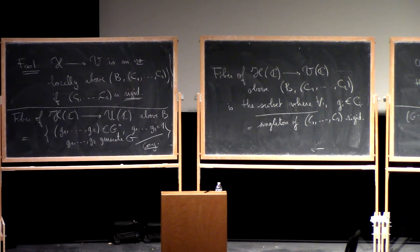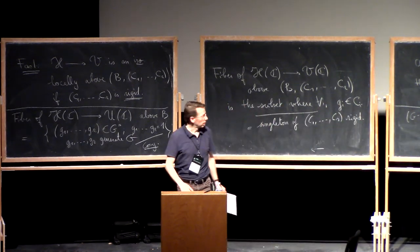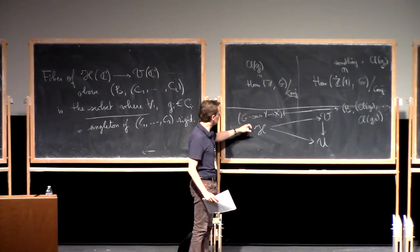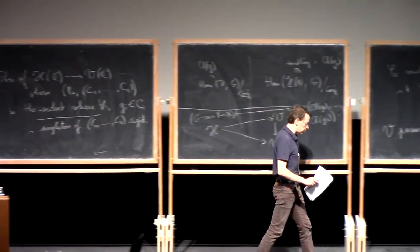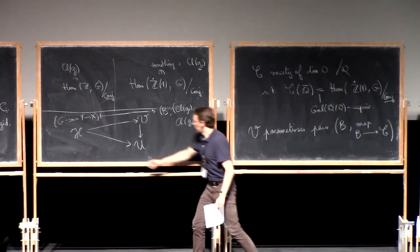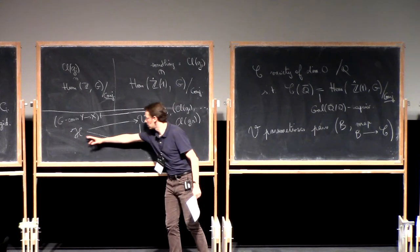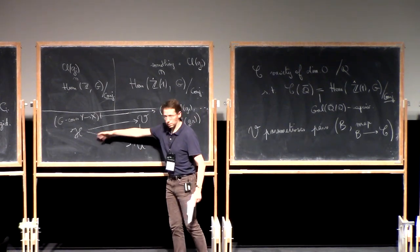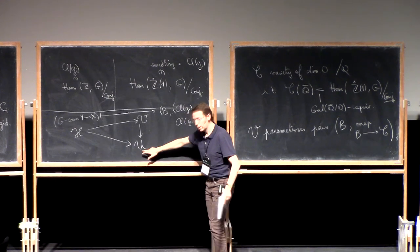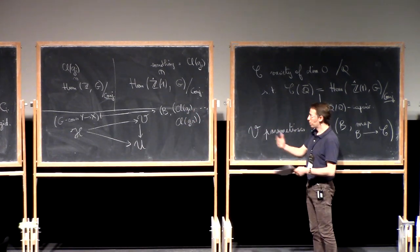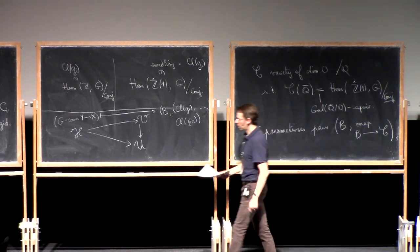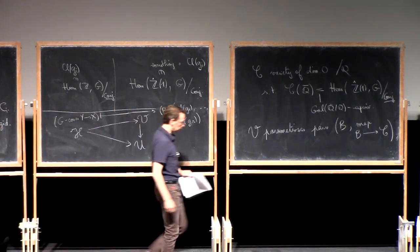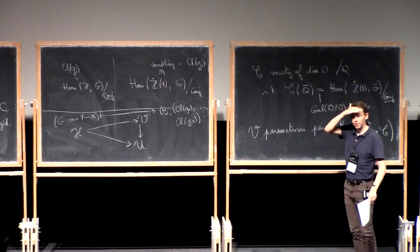The fiber of ℋ → V above (B, C₁, ..., Cᵣ) is the subset where each gᵢ belongs to Cᵢ. Rigidity is exactly telling you that this fiber has cardinality 1 — a singleton if (C₁, ..., Cᵣ) is rigid. So you get the local isomorphism over ℂ and hence also over ℚ. Your rational point lifts to a rational point of ℋ. The fundamental group of 𝒰 is the braid group, and understanding orbits of the braid group on the fiber — though feasible with computers — becomes very difficult as r grows.